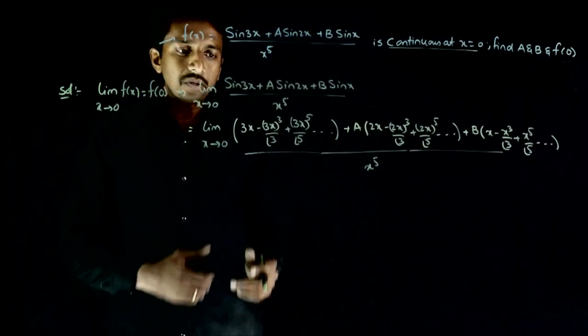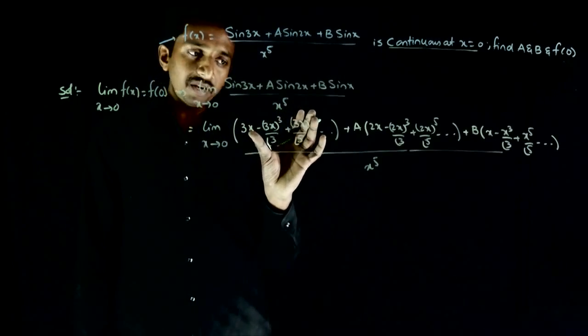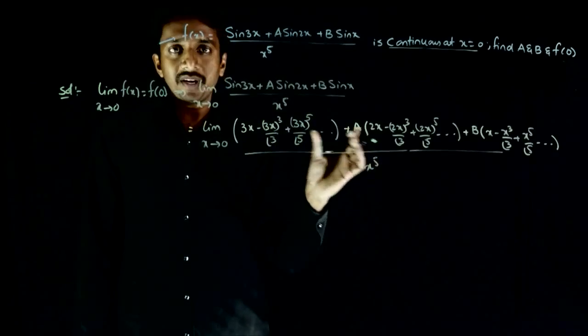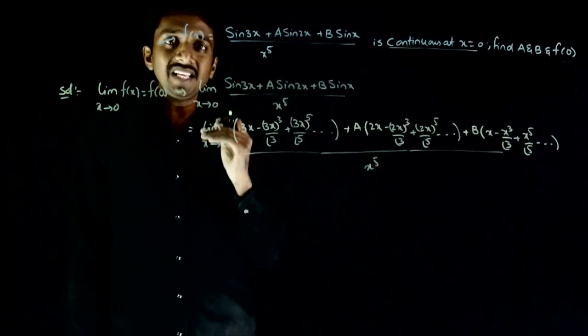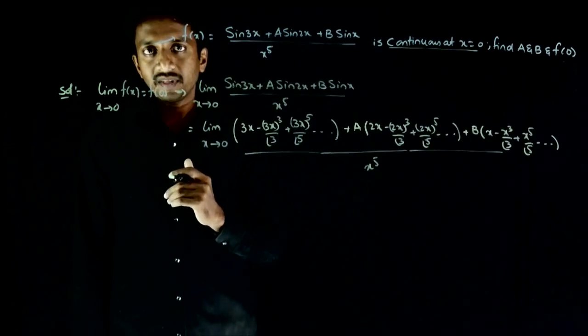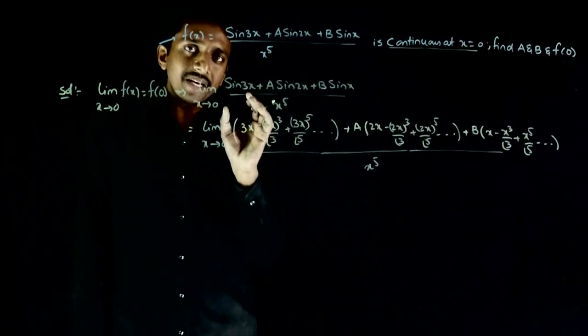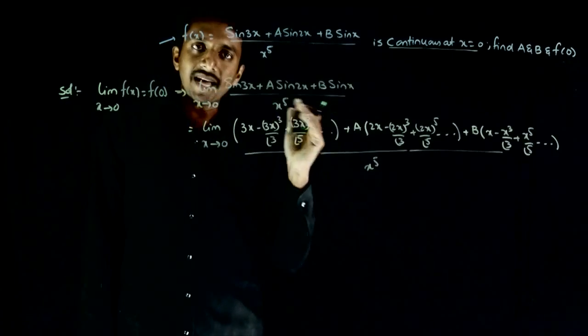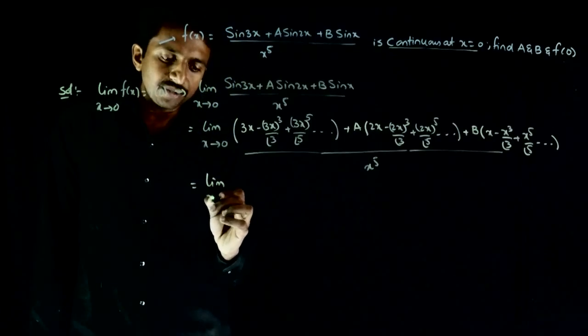Now the numerator is also a polynomial of infinite degree. Denominator is also a polynomial. You know that when x tends to 0, only the least power of x matters. All the higher powers of x can be neglected. Compared to the least power of x, all the higher powers can be neglected. That equals limit x tends to 0.